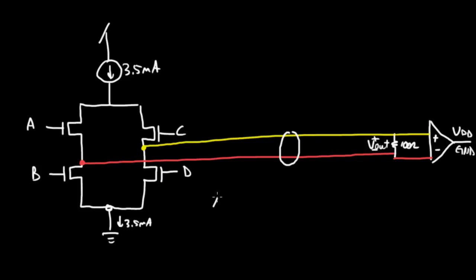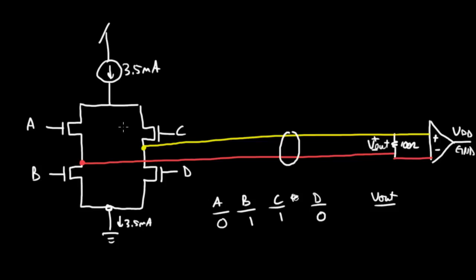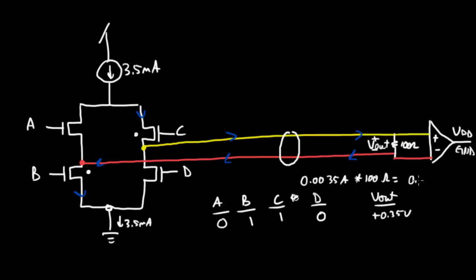Let's draw out a truth table for A, B, C, D. In the first case, A is logic zero, B is logic high, C is logic high, D is logic zero. In this case, the current flows through the network and Vout is going to be plus 0.35 volts, where you have the current 0.0035 amps times 100 ohms equals 0.35 volts.